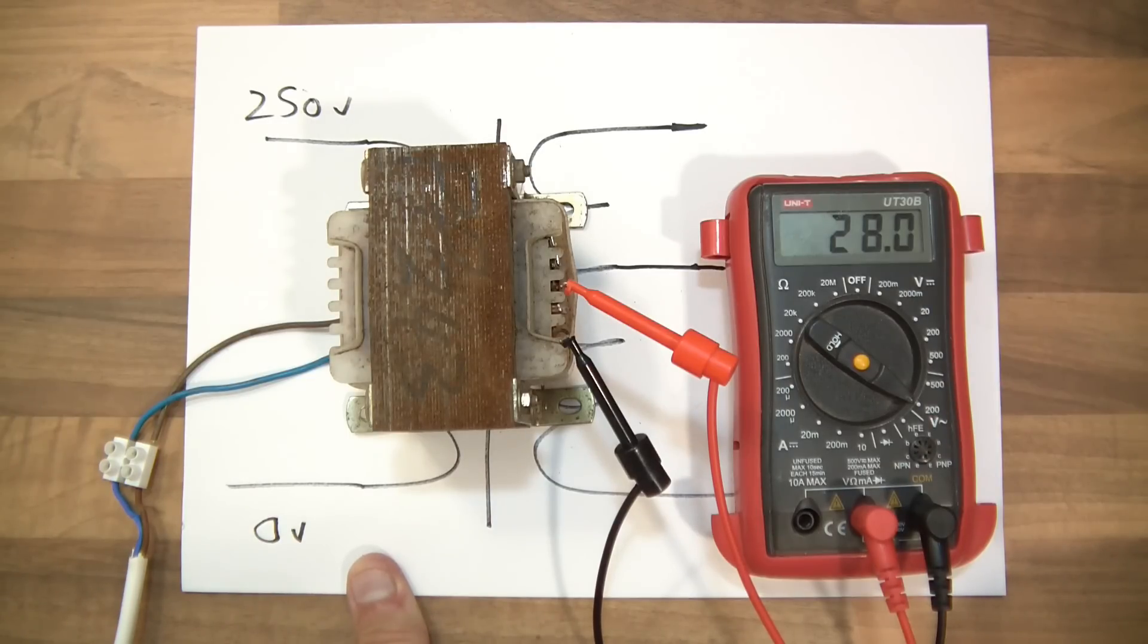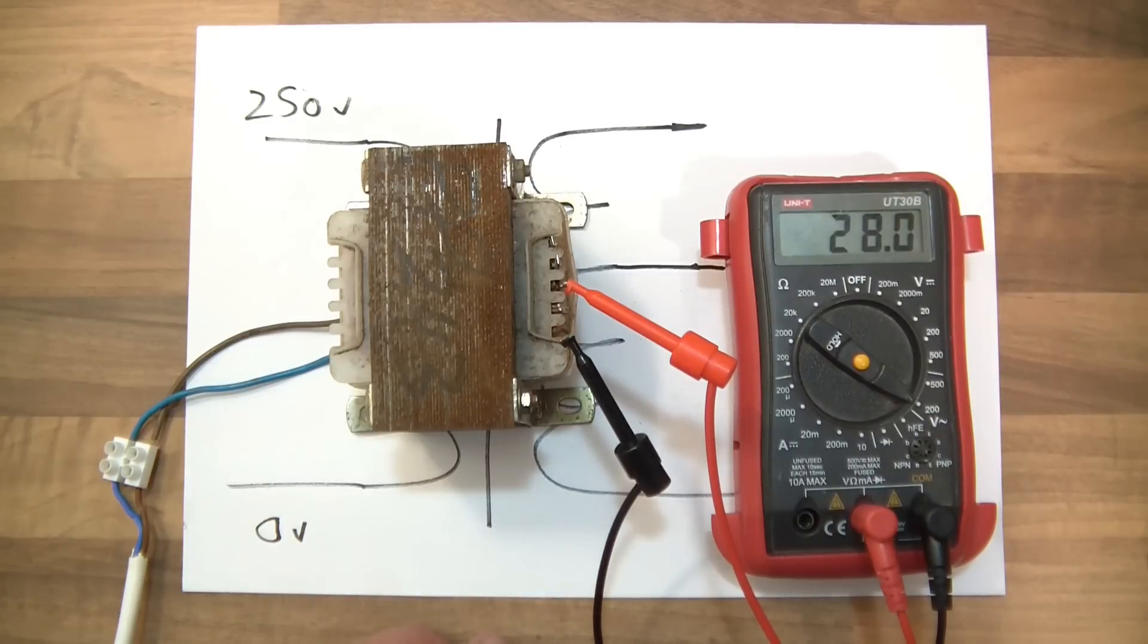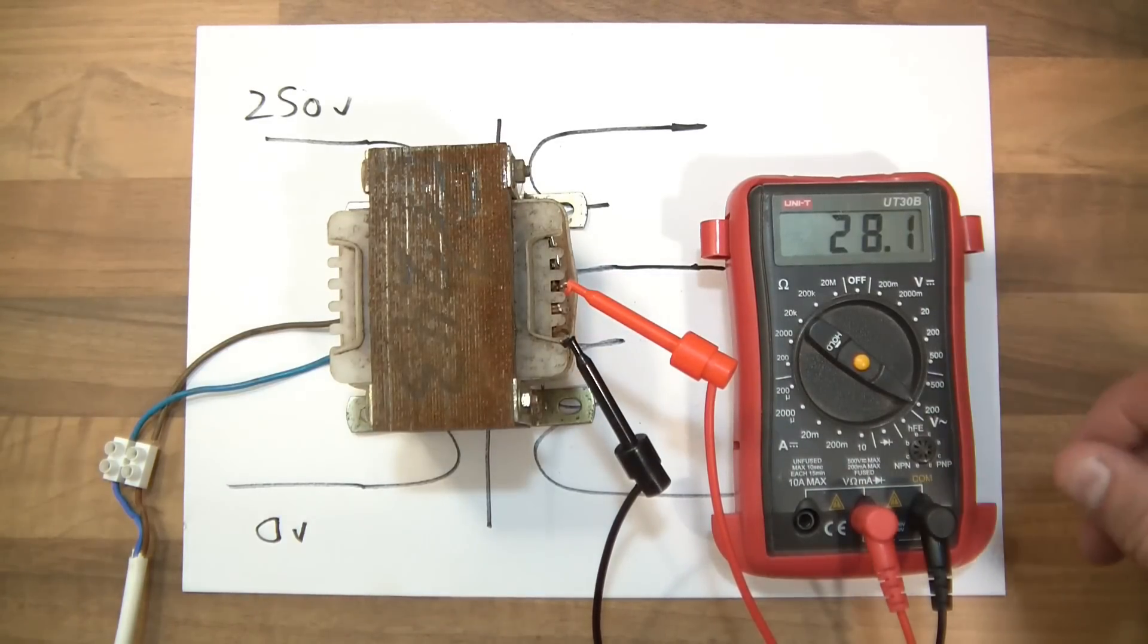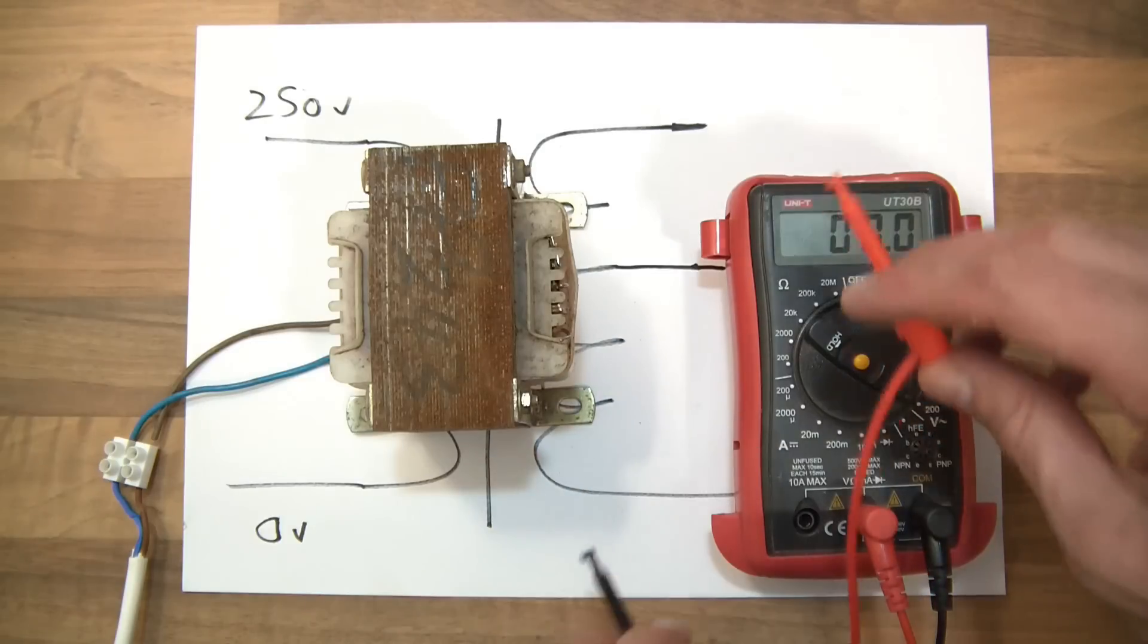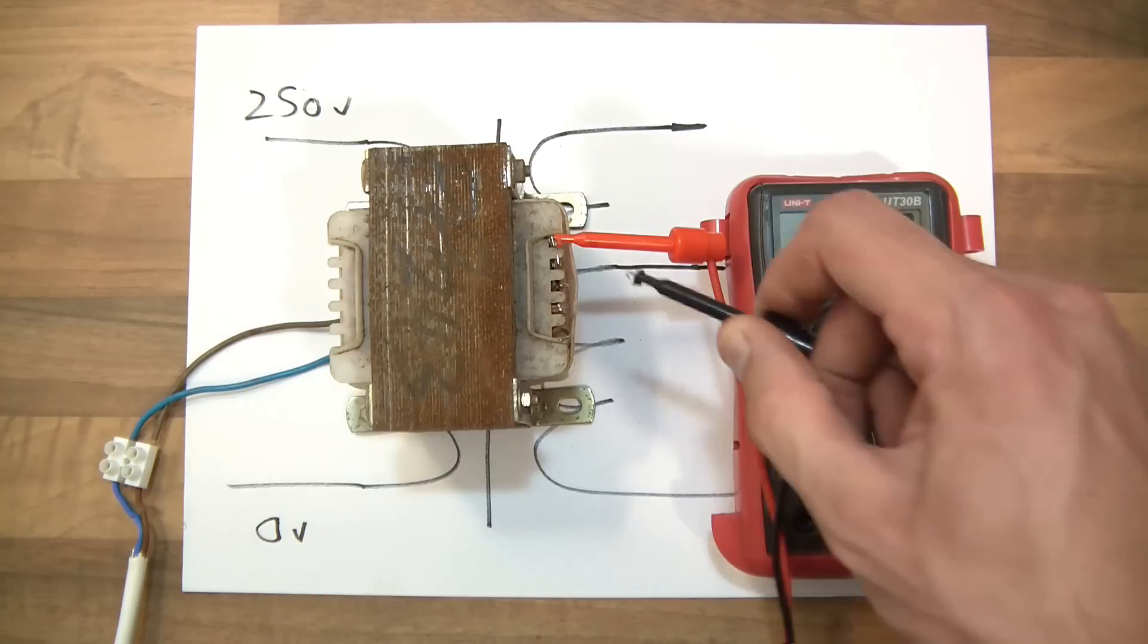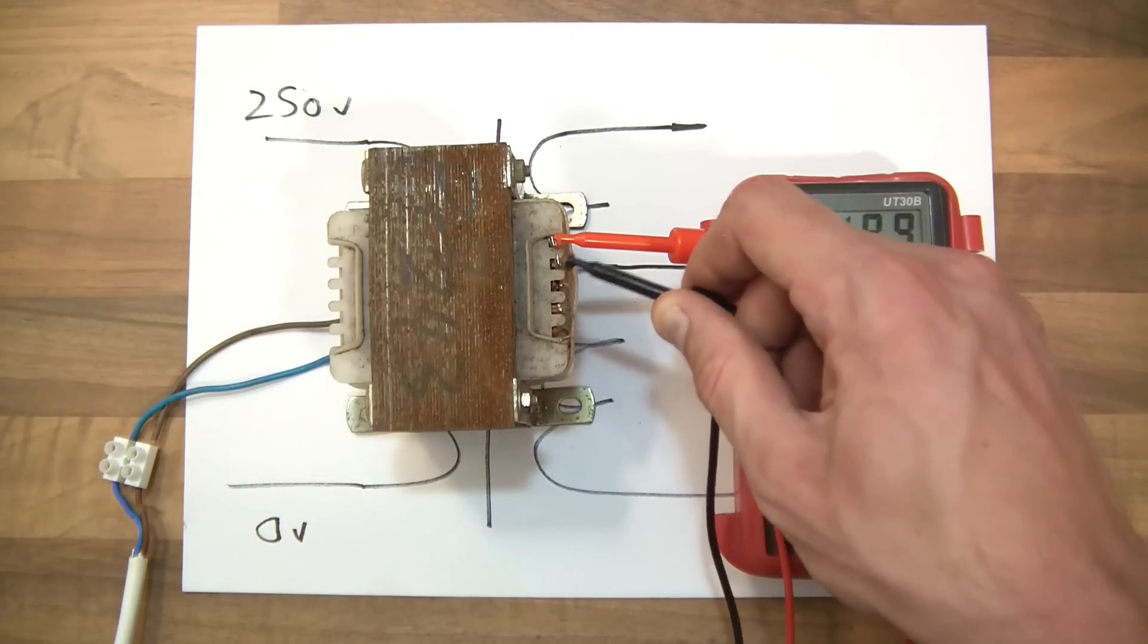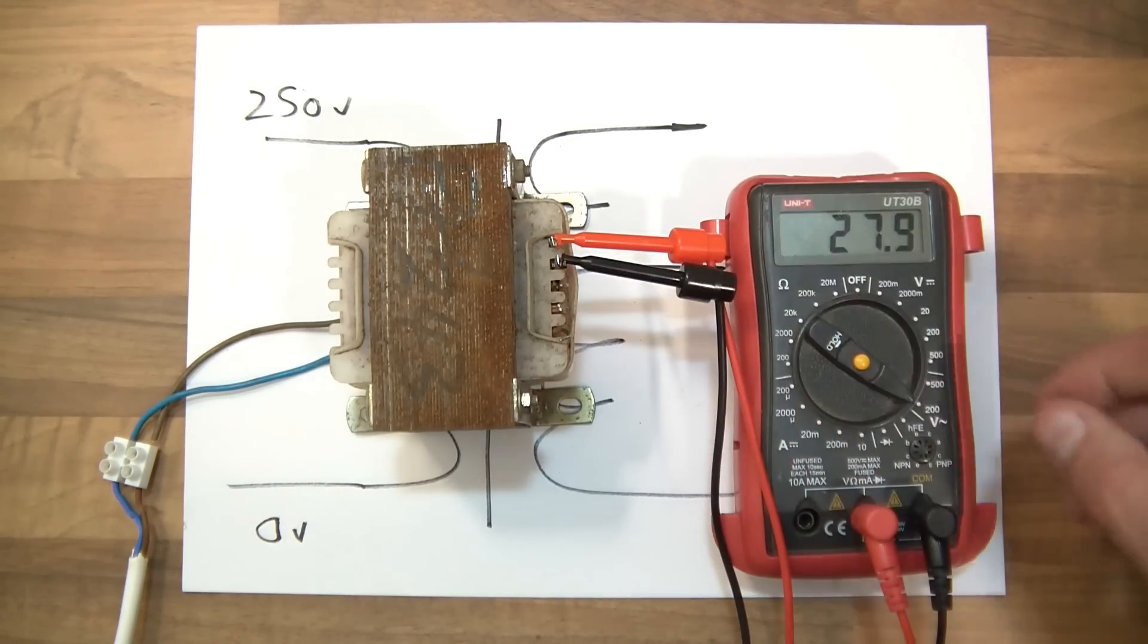So now I tested the other two taps and they appeared to be shorted together. So let's see what happens here. Put one on there. Put one on here. I'm very cautiously putting these on in case anything silly happens. I'm not really used to working with transformers. Ah, 28.